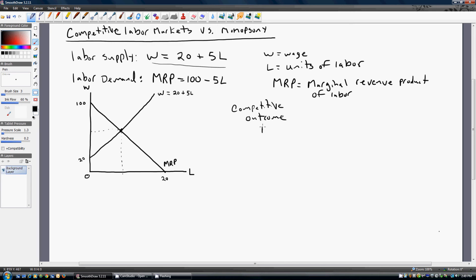And we're just going to set marginal revenue product equal to the wage. So 100 minus 5 times L equals 20 plus 5L. And we get 10L equals 80 or L equals 8. And maybe we're measuring units of labor in thousands. Okay, so the equilibrium quantity of labor is 8.